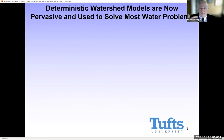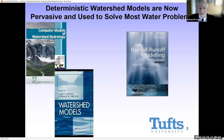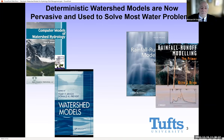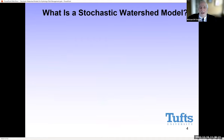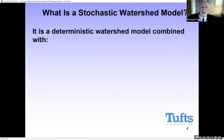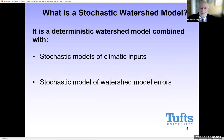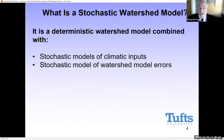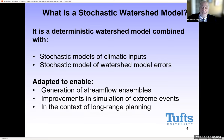Deterministic watershed models are pervasive. Many of you have seen textbooks summarizing literally dozens of rainfall-runoff models, also called watershed models. They've been around for a long time and are increasingly sophisticated across time and space scales. They're wonderful tools, so the question is: how can we use them in the proper framework to extend their applicability to risk-based planning over long-range periods? Stochastic watershed models are basically a deterministic watershed model combined with a stochastic model of the inputs and a stochastic model of the calibration errors. The deterministic model is adapted to enable generation of streamflow ensembles, improvements in simulation of extreme events, and all in the context of long-range planning.